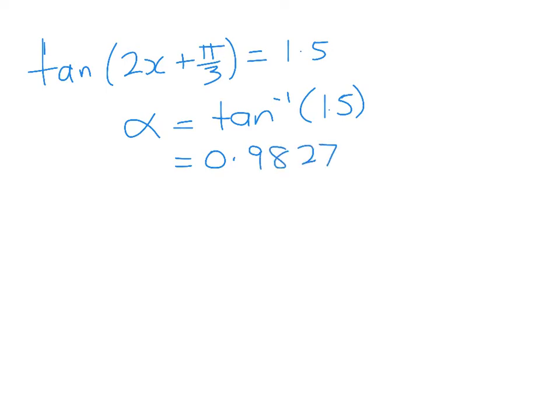Okay, so tan of 2x plus π on 3 is equal to 3 over 2, which is 1.5. So step one is to find the principal value, so the first value, where that is a true statement. So what we're looking for to do that, first we find this, the angle whose tangent is 1.5. And that's not a particularly nice number. That works out to be 0.98279. I've gone to lots of decimal places on purpose. And now what I say is, well, that's my first value of 2x plus π on 3.